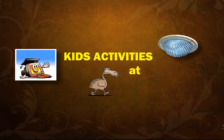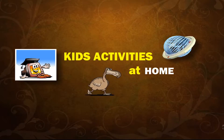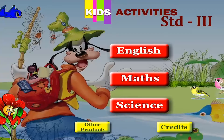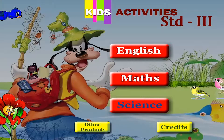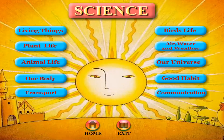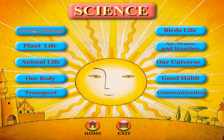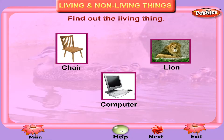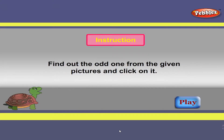Kids activities at home. Class 3 Science. Living things. Odd one out — Health. Find out the odd one from the given picture and click on it.